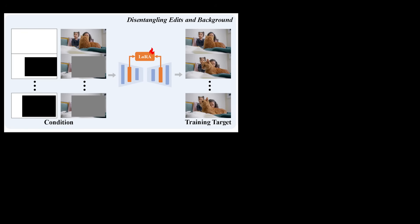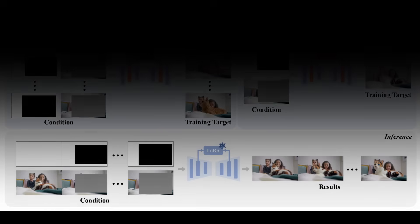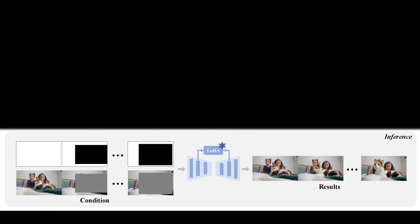Look at the top section called 'disentangling edits and background' — this is the training phase. On the far left, you give the AI the condition: that's the original video frame with the part you want to edit masked out, plus your edited first frame. The AI then learns, through these LoRA blocks, to completely separate the style of your edit from the unedited background. This is the crucial part — it's figuring out what you changed, not just that you changed something. In the inference process, you feed it your video sequence frame by frame. The AI uses those specially trained LoRA blocks and applies that change only to the masked area in each frame. Because it already learned to ignore the background, it pastes your edit onto the moving object perfectly, preserving everything else.